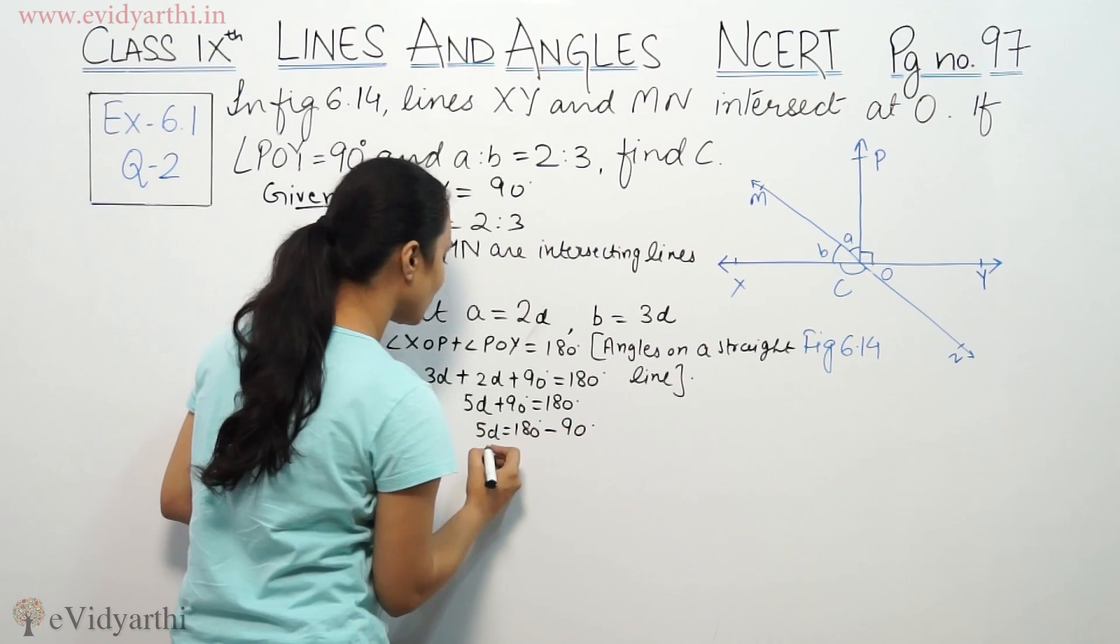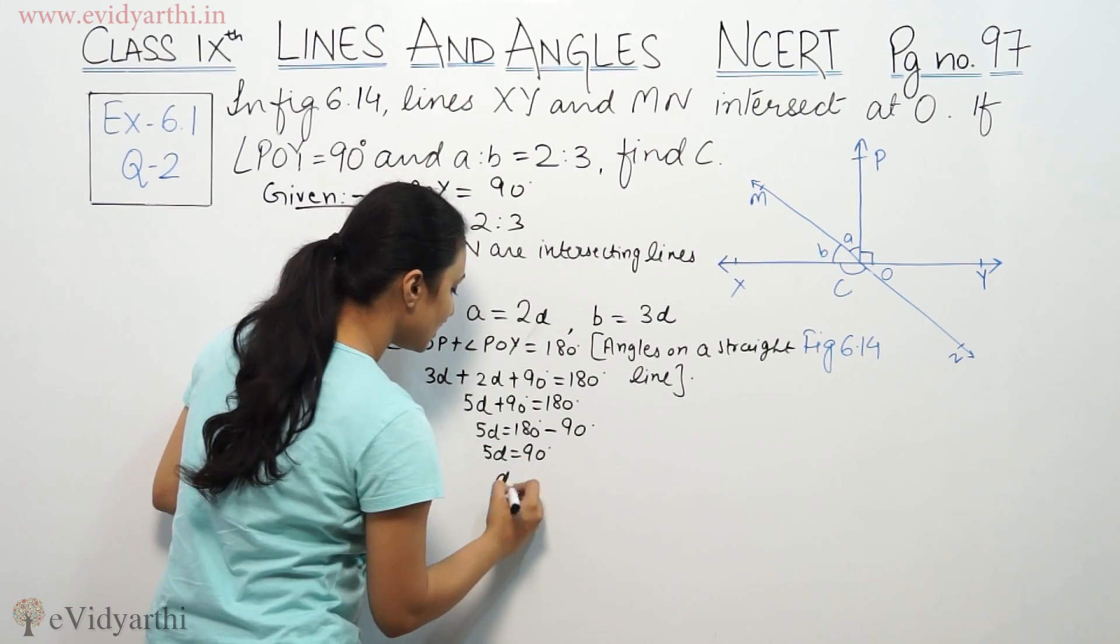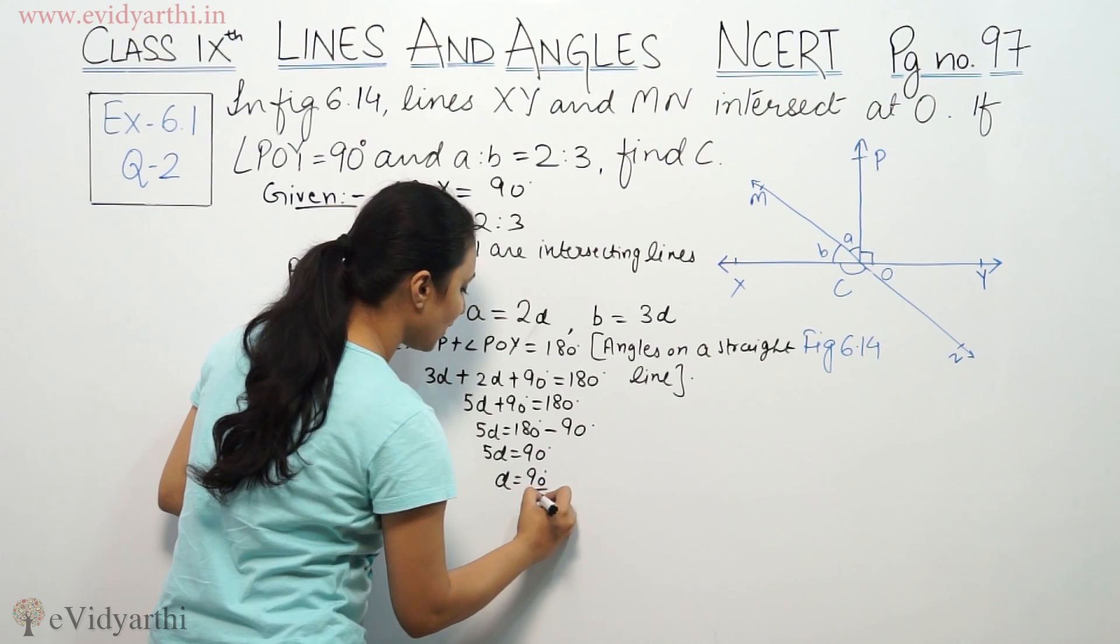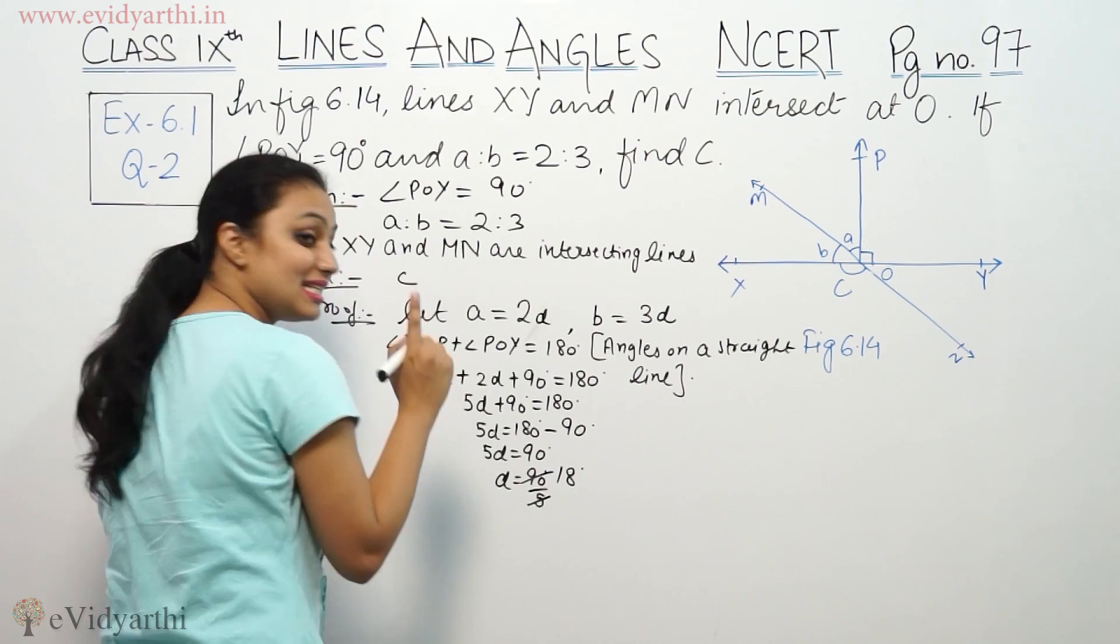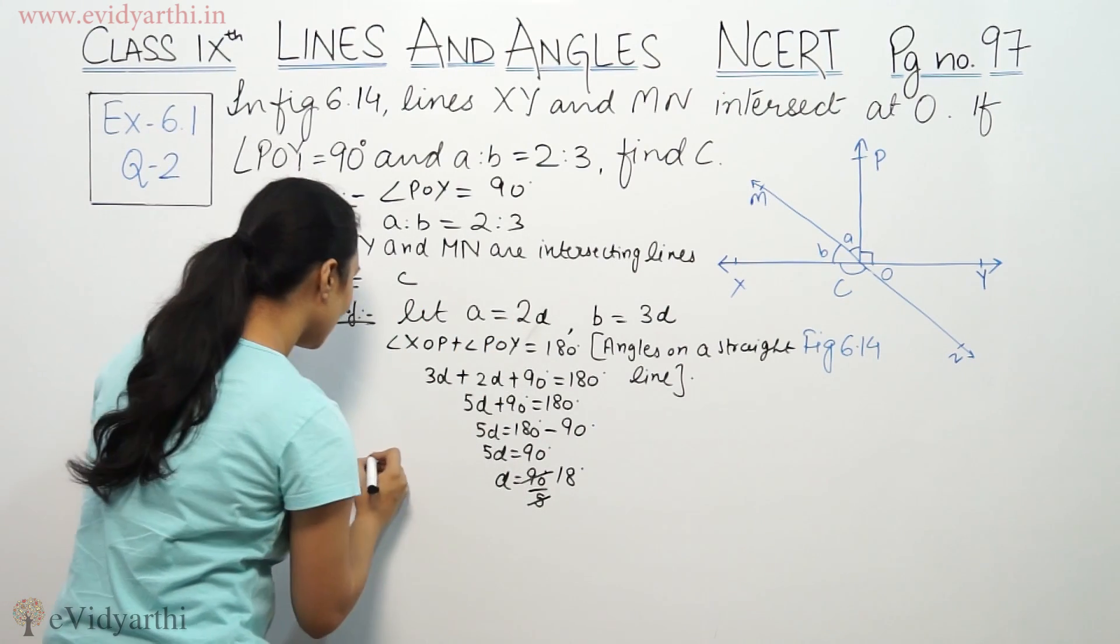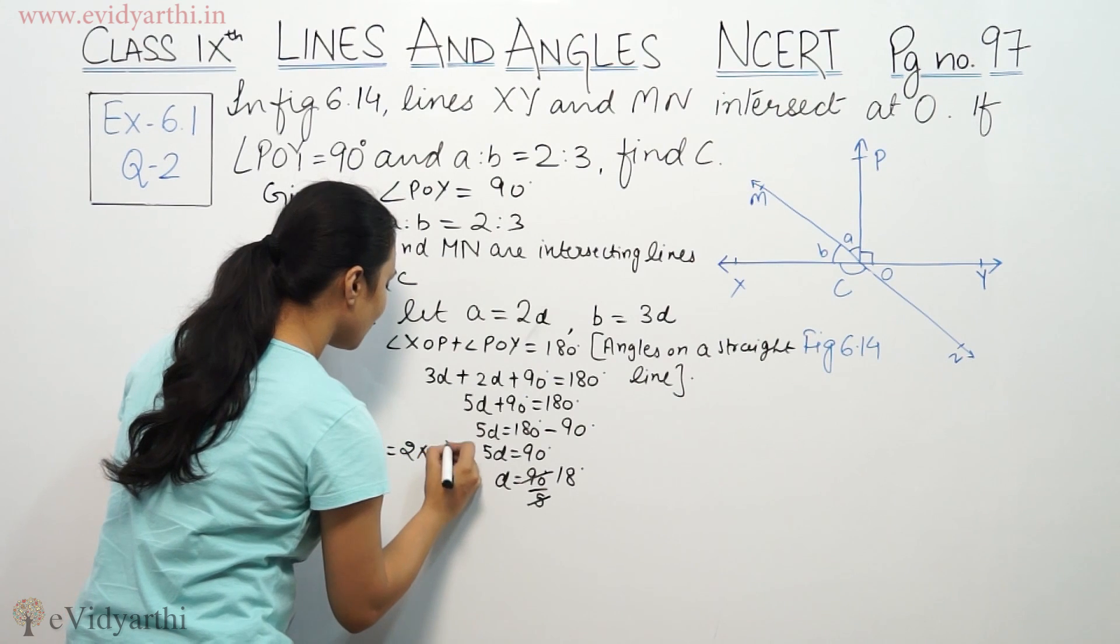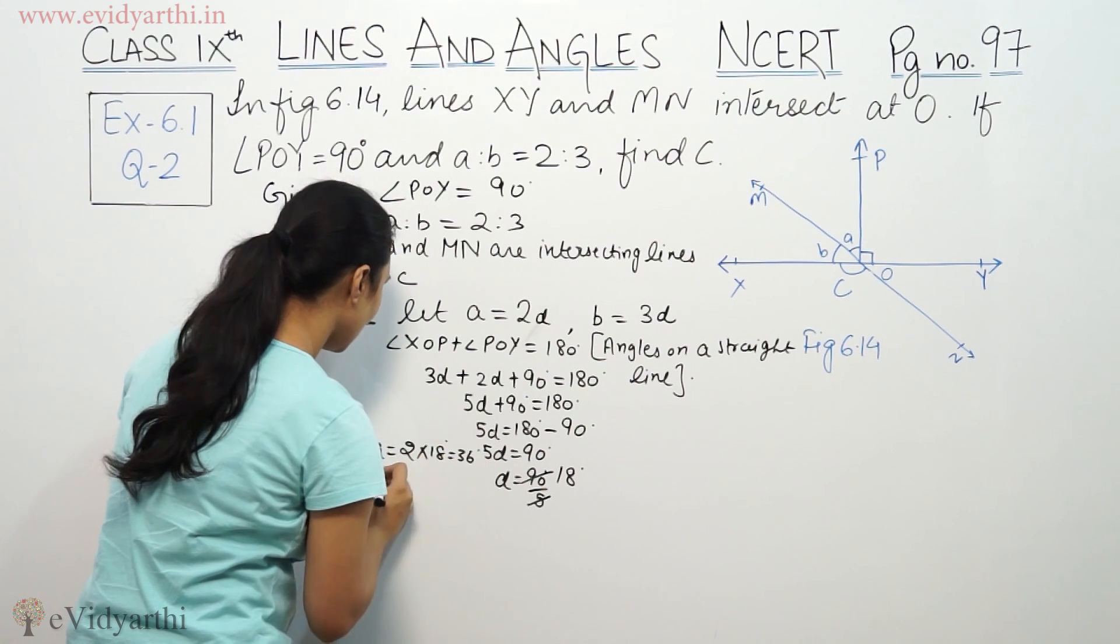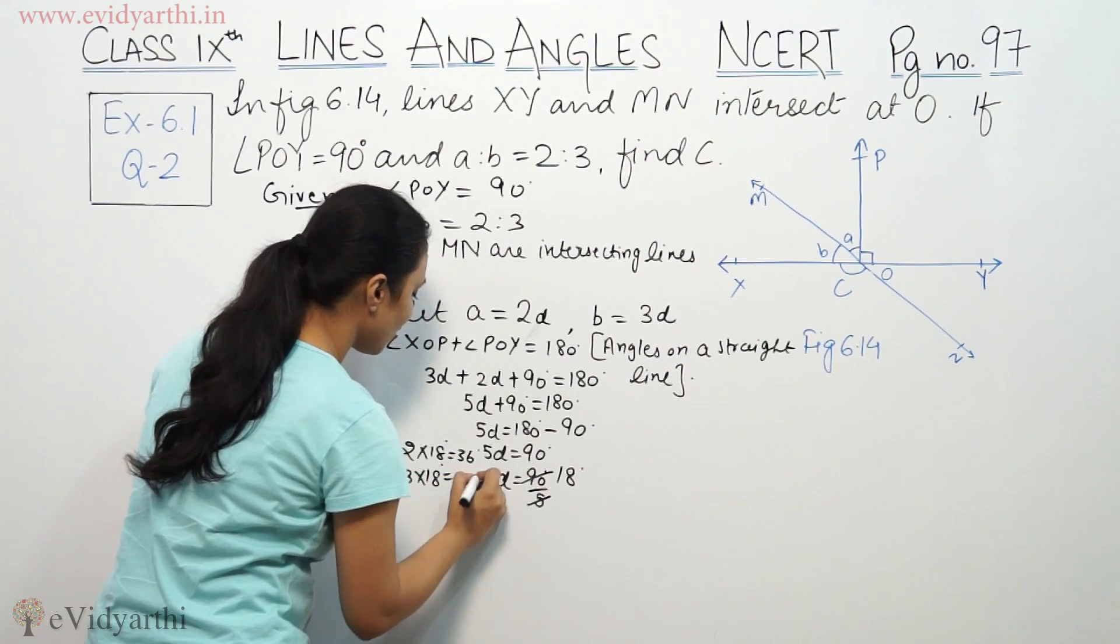When we subtract, 5d equals 90 degrees, so d equals 18 degrees. This implies a will be 2 times 18 degrees, which is 36 degrees, and b is 3 times 18 degrees, which is 54 degrees.